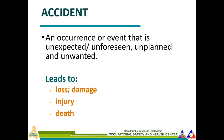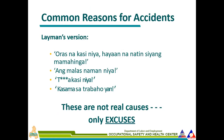First, let us define what an accident is. An accident is an occurrence or event that is unexpected and unplanned. When an accident happens, it leads to loss or damage, injury, and the worst case — death. That is why we don't want it to happen, and the government through DOLE does not want these incidents in the workplace either. So what are the common reasons for accidents?